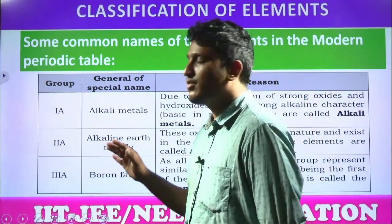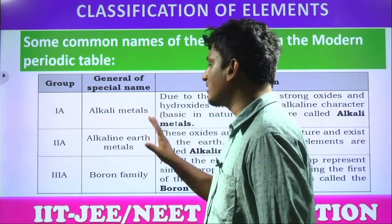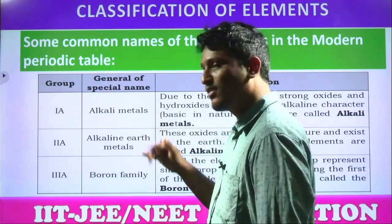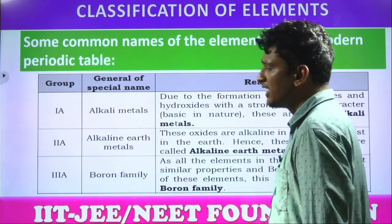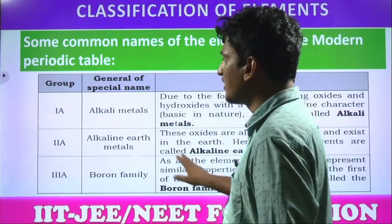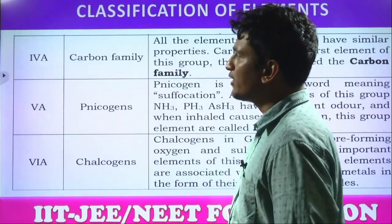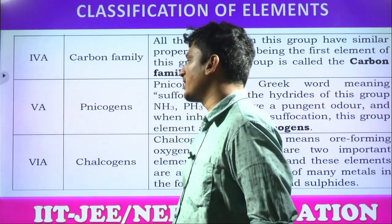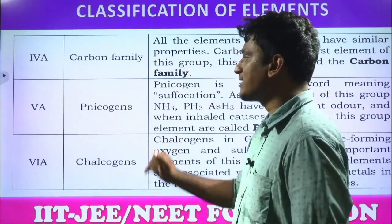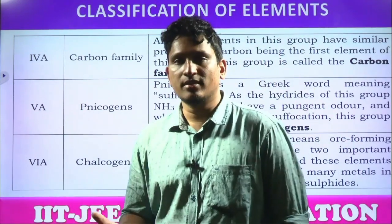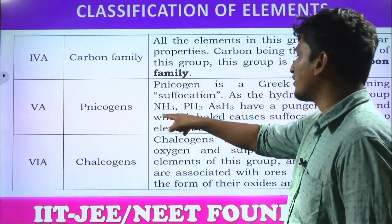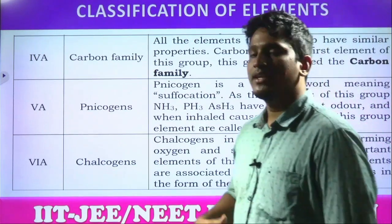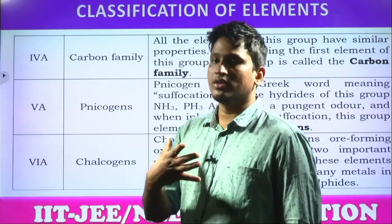What is the difference between the two groups? Simply, earth is added to distinguish them — it does not mean they are found in a special earth layer; they are all found in the earth's crust. Group 13 elements are called the boron family because it starts with boron. Group 14 elements are called the carbon family, starting with carbon. Group 15 elements are called pnictogens — pnicto means unable to breathe or suffocating. These group elements can form suffocating gases like ammonia, phosphine (PH₃), and arsenic trihydride.